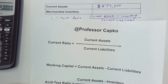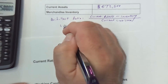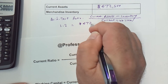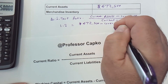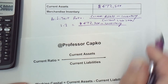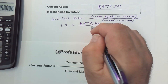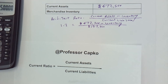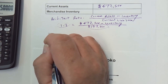The acid test ratio equals current assets minus inventory, all over current liabilities. We know the acid test ratio is 1.2. Our current assets are $472,500, and our current liabilities are $157,500. So: 1.2 equals (472,500 minus inventory) divided by 157,500. I'm going to multiply both sides by 157,500 to clear the denominator.